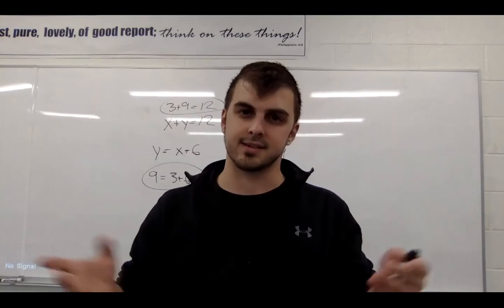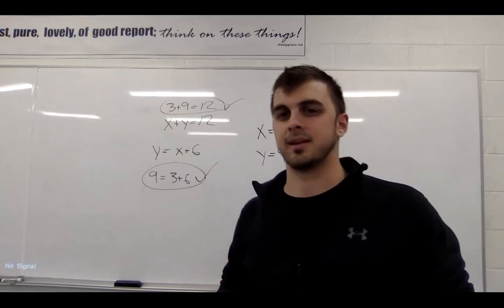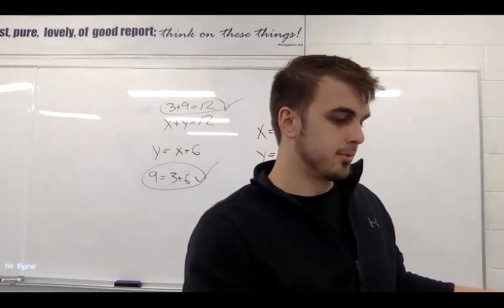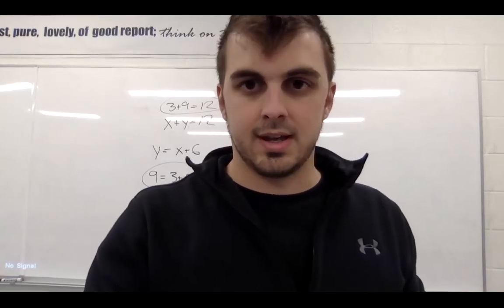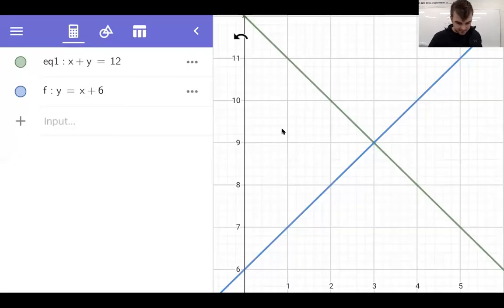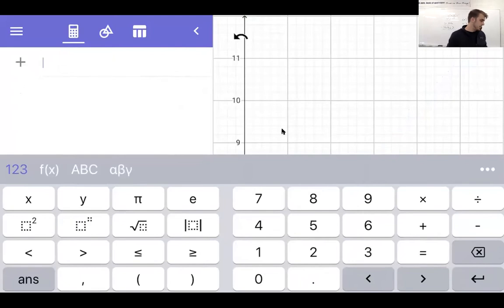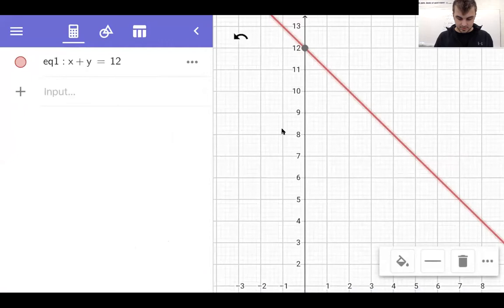If you ever doubt yourself after graphing — like 'wait, Yolanda has 15 and Xena has 9, that doesn't make sense' — you can jump back in and verify. Now moving to Problem B: Nikki is thinking of two numbers, their sum is 12, so again x plus y equals 12. I wouldn't even need to erase that equation.